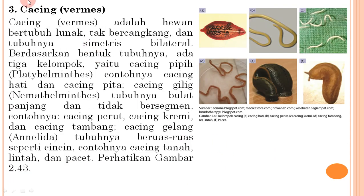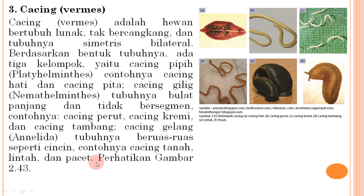Ketiga, cacing (Vermes): hewan bertubuh lunak, tidak bercangkang, tubuhnya simetris bilateral. Ada tiga kelompok: cacing pipih (Platyhelminthes) contoh cacing hati; cacing gilik (Nemathelminthes) tubuhnya bulat panjang dan tidak bersegmen, contoh cacing perut, cacing kermi, dan cacing tambang; cacing gelang (Annelida) tubuhnya beruas-ruas seperti cincin, contoh cacing tanah, lintah, dan pacet. Keempat, Mollusca: hewan bertubuh lunak, banyak lendirnya, dan terbungkus oleh mantel. Contoh: cumi-cumi, gurita, siput, kerang, tiram, dan remis.